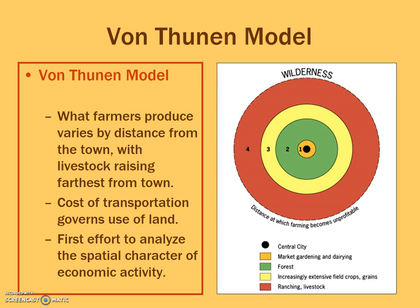Dairy cows are also found in the first ring because they're milked daily and, without refrigeration, the milk must be sold immediately. The second ring is forest, because firewood is used on a daily basis and is heavy. Von Thunen's model has a lot to do with the cost of transportation, which involves both weight and distance — so forest needed to be closer to the town because it's heavy and used frequently.